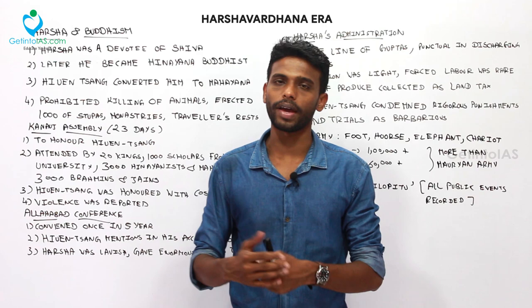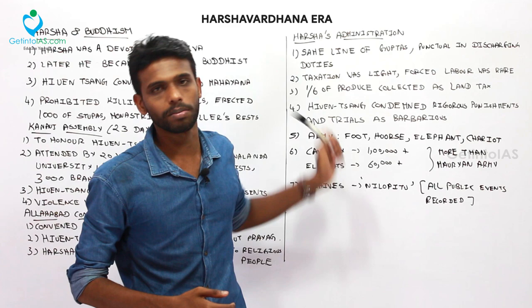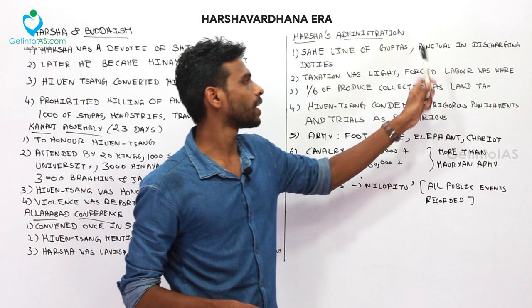Now coming to Harsha's administration. It was along the same lines as the Guptas, since they had been feudatories of the Guptas and followed the same administrative model. They were slightly more liberal compared to the Mauryas. Taxation was light and forced labor was rare. Harsha was punctual in discharging his duties and had many activities to manage.